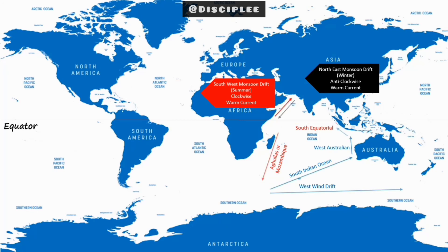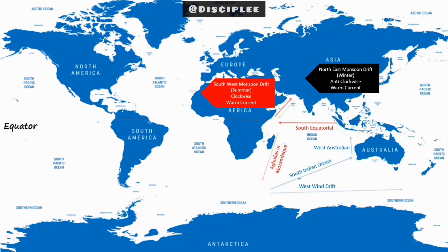So that sums up the circulation in the North Indian Ocean. We have already seen the circulation in South Indian Ocean, and the rest of the oceans we have covered in the earlier videos. This sums up our discussion on Indian Ocean circulation. To watch more such content, do not forget to like, share, subscribe, and comment.